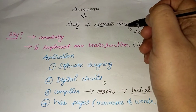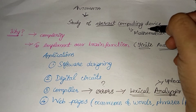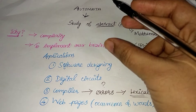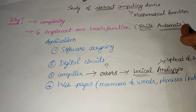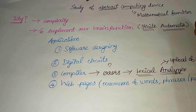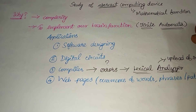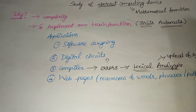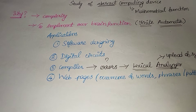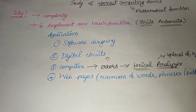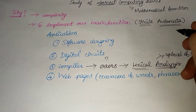Automata is the mathematical model we will learn. If you are clear — if you have a brain function and a particular problem, your brain will solve it. That is the Finite Automata. If you have a problem with a machine, you will solve it — that is also Finite Automata.